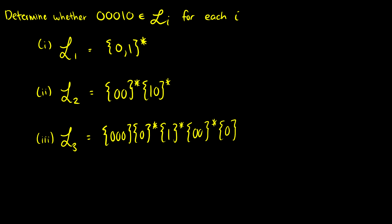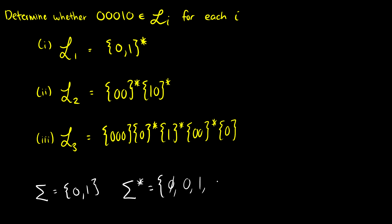A quick reminder: if we have a language sigma which is {0,1}, then sigma star is going to be all possible outputs. So it could be the empty string, zero, one, 00, 01, 10, 11 — all possible combinations. When we see a star, that means we can have zero, one, two, three, and so on of those elements.